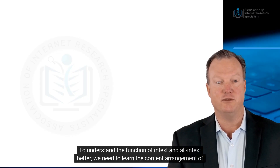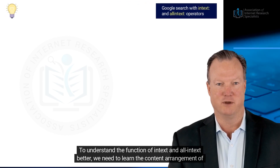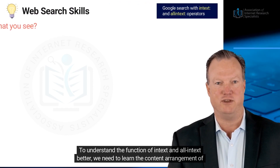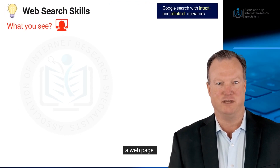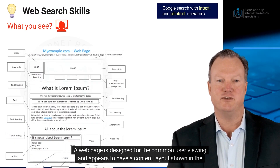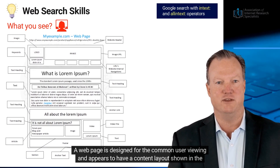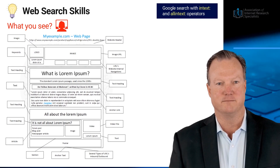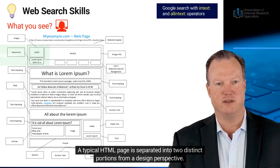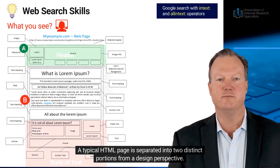To understand the function of in-text and all-in-text better, we need to learn the content arrangement of a web page. A web page is designed for the common user viewing and appears to have a content layout shown in the illustration. A typical HTML page is separated into two distinct portions from a design perspective.